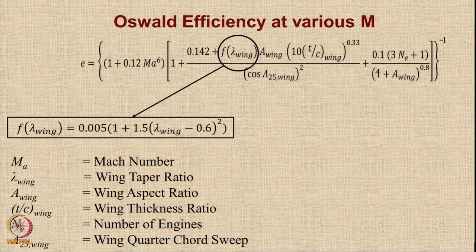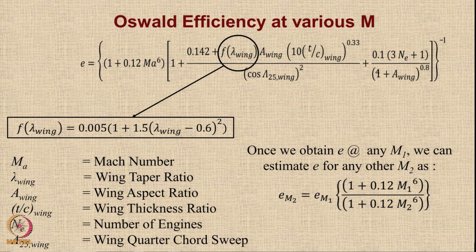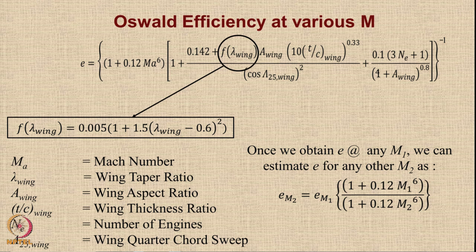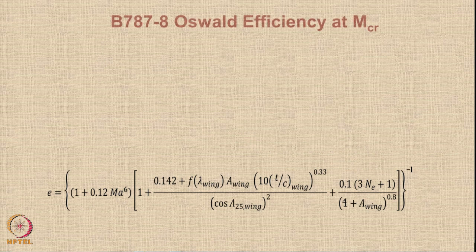We need to calculate a function related to lambda wing called F-lambda, whose formula is shown on screen. Once we obtain the value of E for any Mach number, we can estimate it at another Mach number simply by taking the ratio Em2/Em1, since all quantities inside the square bracket are constant with respect to Mach number. Let us proceed to calculate the Oswald efficiency of Boeing 787 at the cruise Mach number using this formula.